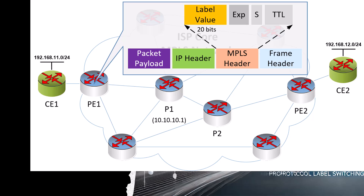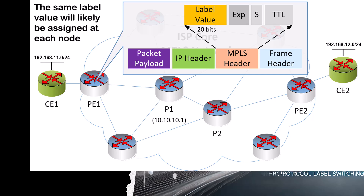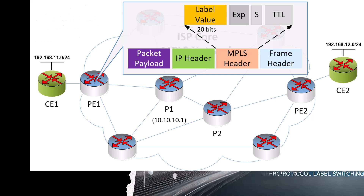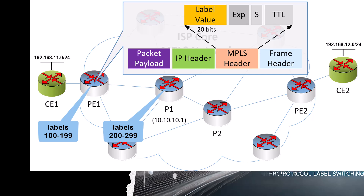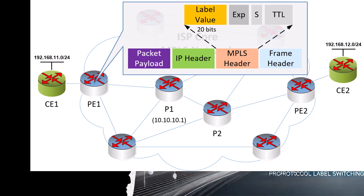So if you leave all configurations at their default, you will most likely see that the same label is being used by multiple routers along the path. Because we humans need some way to differentiate between the actions taken by each node, it's always a good idea to change this default behavior so we can more easily determine which labels are assigned by which nodes. For example, you can make PE1 use a range of labels from 100 to 199, make P1 use a range of 200 to 299, and P2 use a range of 300 to 399, and so on. That way, you can know which node generated which label. In a later video, when we get into configurations, we'll show how this is actually implemented.